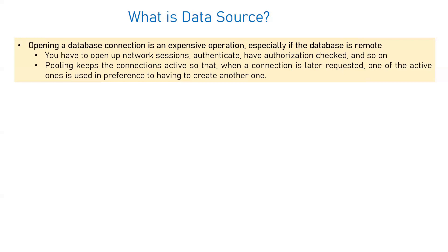To overcome these performance issues, there is a concept called data source. A data source is a pool which keeps connections active, so that when a connection is later requested, one of the active ones is used in preference to creating a new one. Whenever your data source is started — that is, whenever you start your WebLogic server — your data source also starts. Based on parameters like initial capacity or maximum capacity, it creates the initial connections, and those connections remain active all the time.